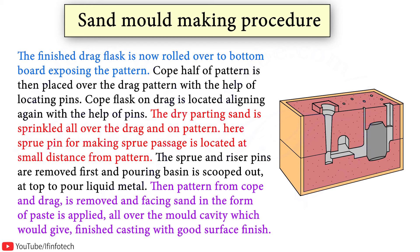The cope flask on the drag is located and aligned again with the help of pins. Dry parting sand is sprinkled all over the drag and on the pattern. The sprue pin is located at a small distance from the pattern. The operations of filling, ramming, and venting of the cope proceed in the same manner as performed in the drag. The sprue and riser pins are removed first, and the pouring basin is scooped out at the top to pour liquid metal.